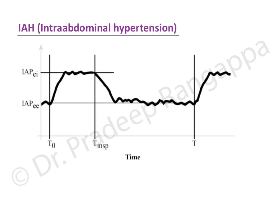If you look at the waveform of intra-abdominal hypertension, during end inspiration your intra-abdominal pressure goes up, and during expiration it comes down. That is the basic waveform of how intra-abdominal pressure looks. Normally, intra-abdominal pressure is around 5 mmHg.